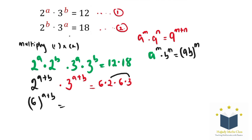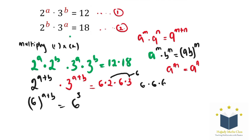2 multiplied by 3 here is the same thing as 6. So here we have 6 multiplied by 6 multiplied by 6, which is the same thing as saying 6 to the power of 3. Again, the rule of indices says that if you have A to the power of M equal A to the power of N, then M equals N. So using the same rule, I can say that A plus B equals 3. Let me call that equation 3.